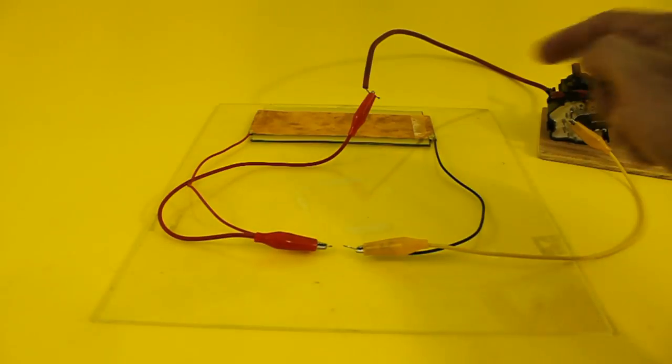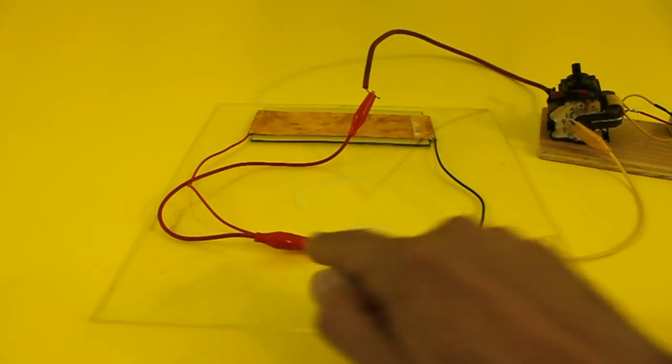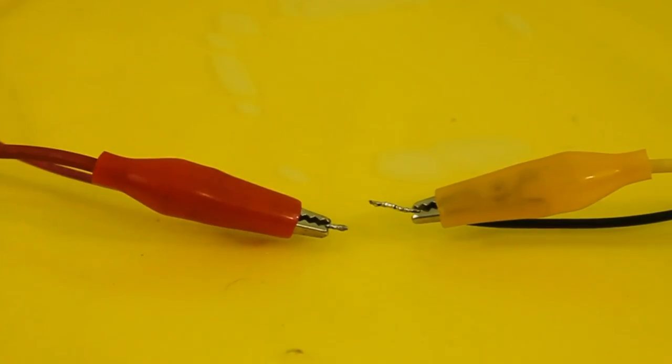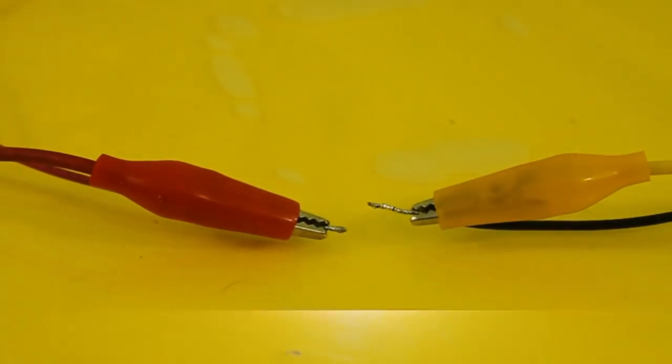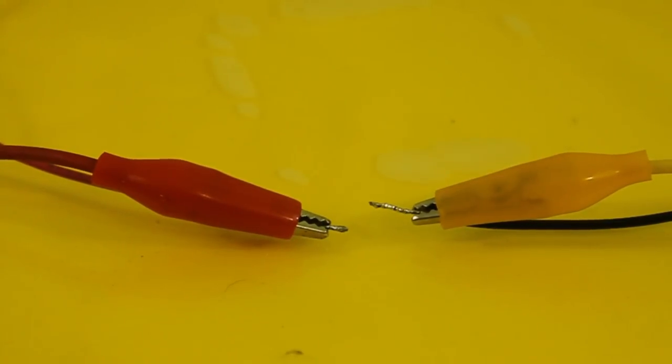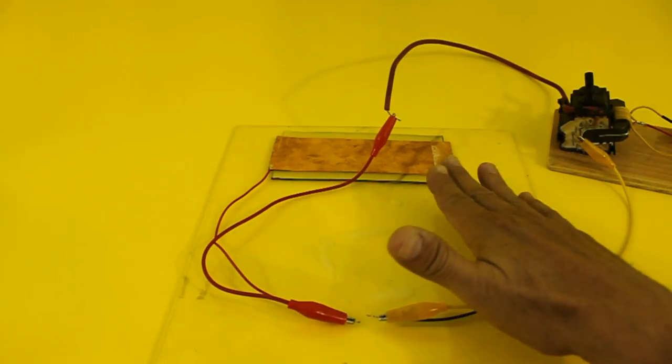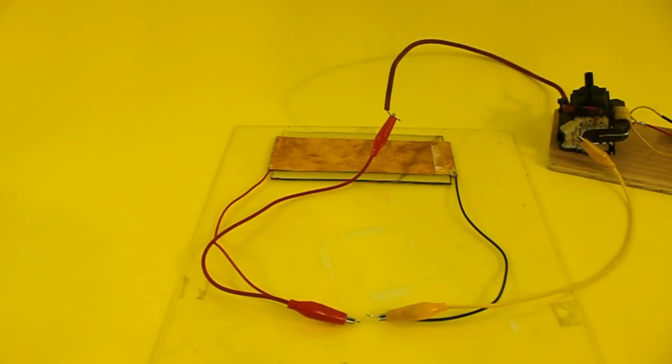Now the capacitor is connected in parallel with the high voltage output. Okay, there you have it, a homemade capacitor for high voltage projects.